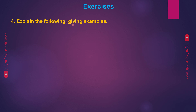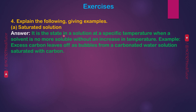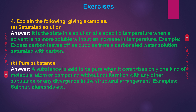Question 4: Explain the following giving examples. A — Saturated solution: it is the state in a solution at a specific temperature when a solvent can dissolve no more solute without an increase in temperature. Example: excess carbon leaves off as bubbles from a carbonated water solution saturated with carbon dioxide. B — Pure substance: a substance is said to be pure when it comprises only one kind of molecule, atom or compound without adulteration. Examples: sulfur, diamonds, etc.